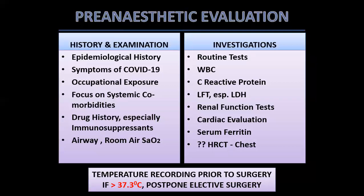When it comes to pre-anesthetic evaluation, history will obviously include epidemiological history. We will ask about symptoms of COVID-19, occupational exposure, systemic comorbidities, and drugs — especially immunosuppressants. We must assess the airway carefully as we don't have many options. We must also record room air oxygen saturation, as several patients have saturations below 90% without even knowing it — a term being coined for this unexplained hypoxia is 'happy hypoxia.'